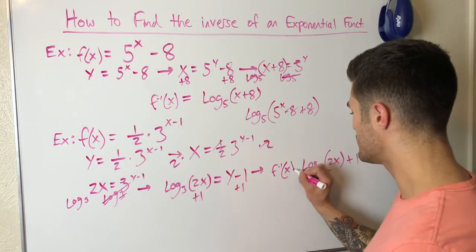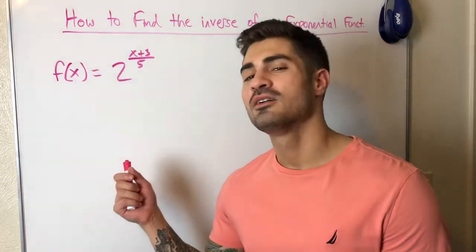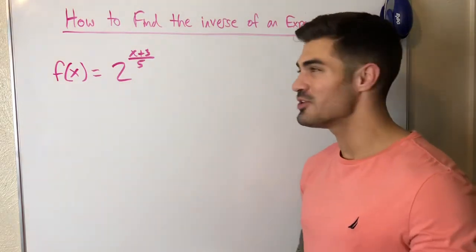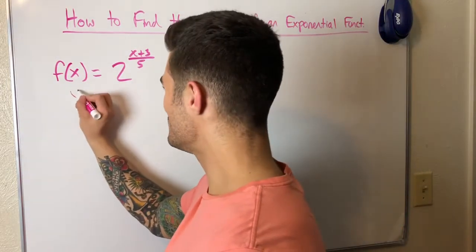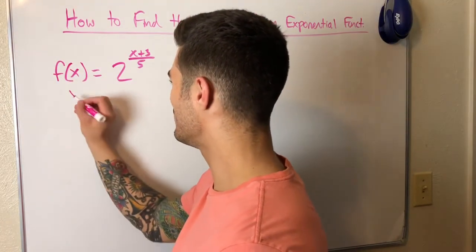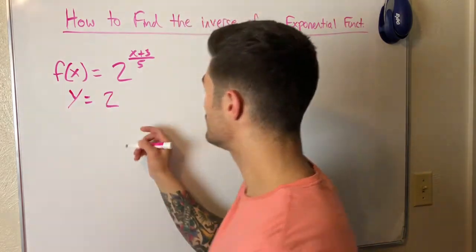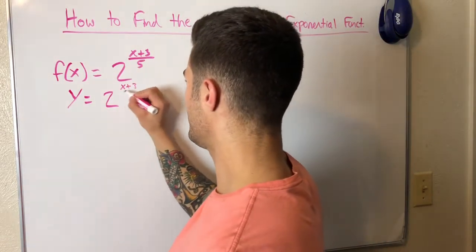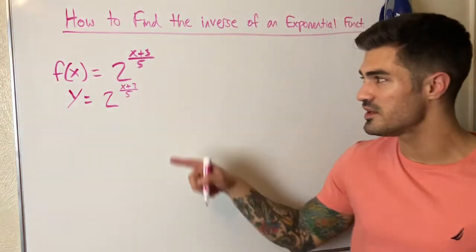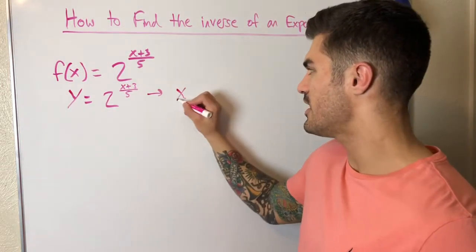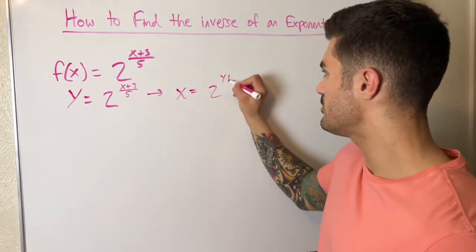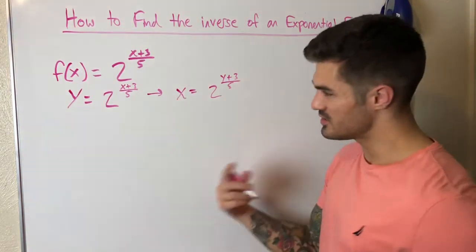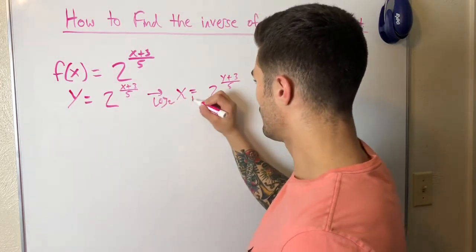Since I've solved for y, I replace it with the inverse notation to make it clear I've found the inverse. Now for one more example — I encourage you to pause the video and try this on your own. The function is f(x) = 2 to the (x + 3) over 5. I'll replace f(x) with y, switch x and y to get x = 2 to the (y + 3)/5, then take log base 2 of both sides.